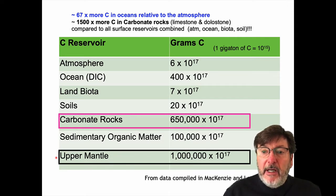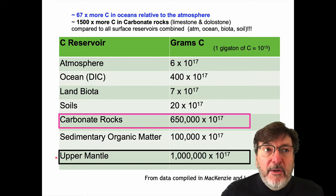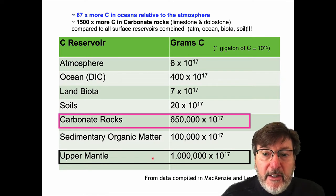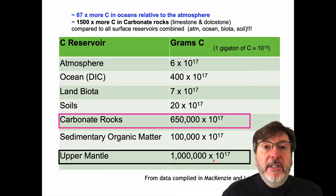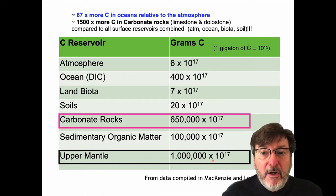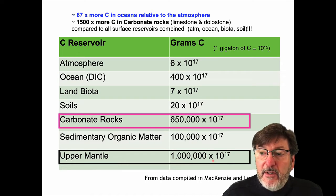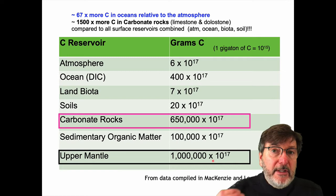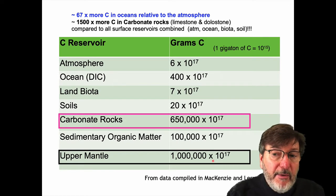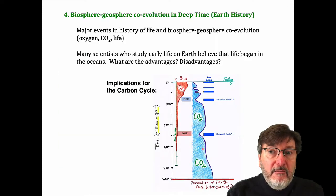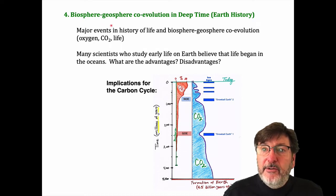I pointed out that surprisingly, the upper mantle still contains a lot of carbon. Most of this carbon — the stable form of carbon in the mantle as a crystal and solid form — is diamond. So there must be a lot of diamond left inside the mantle.